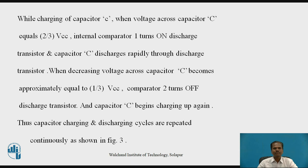While charging of capacitor C, when the voltage across it increases and equals two-third VCC, the internal comparator 1 sets off the internal flip-flop, which turns on the discharge transistor. Capacitor C then discharges very rapidly through the discharge transistor, and the voltage across the capacitor goes on decreasing. When the voltage across capacitor C becomes approximately equal to one-third VCC, comparator 2 turns off the internal discharge transistor, and capacitor C again begins charging. Thus, the capacitor charging and discharging cycles are continuously repeated as shown in figure number 3.